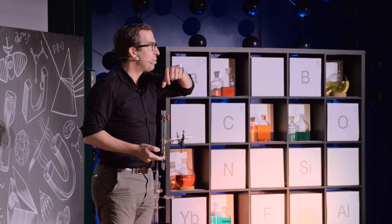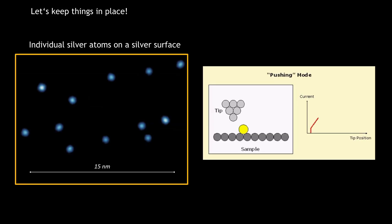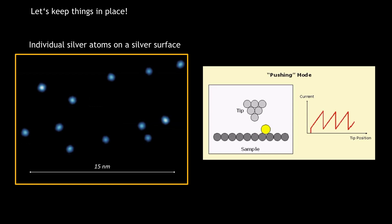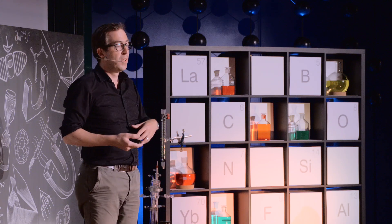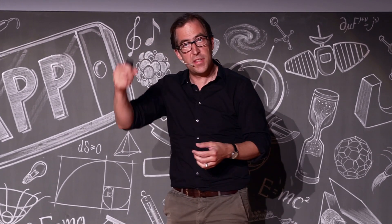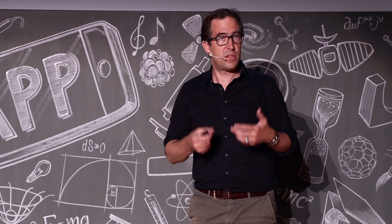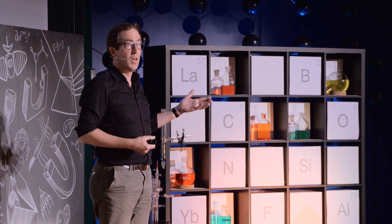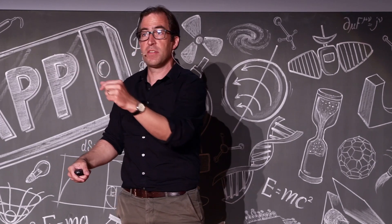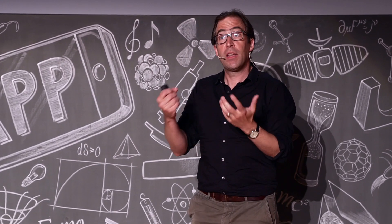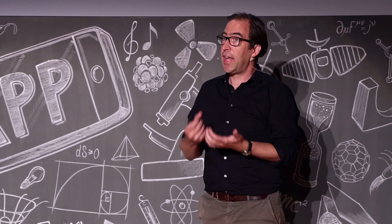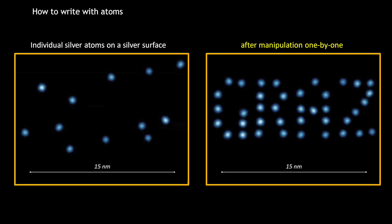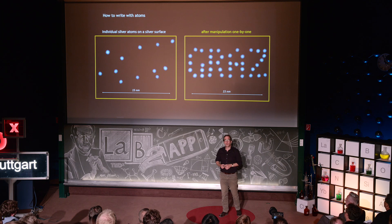We can use that with the tip and repel a single atom over the surface. It hops away because it's repelled. While we do that, we measure the current — as we approach, the current increases and it jumps down when the atom hops. We can see directly the type of motion: it's a pushing mode, repulsive. We can also do it in the attractive mode, where the tip pulls the atom, and we see a different signal — sawtooth-shaped but inverted. We can tell from the curve what happened with the atom: it jumped from one lattice site to the next, a distance below one nanometer. If we're experienced, careful, and patient, we can write with atoms.